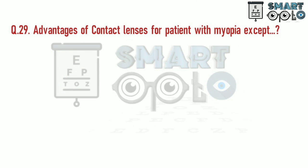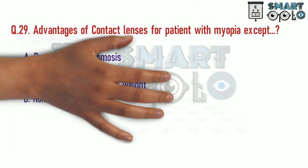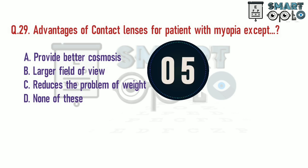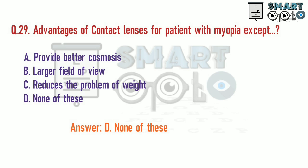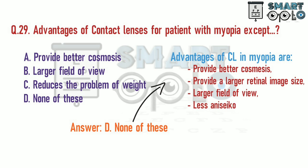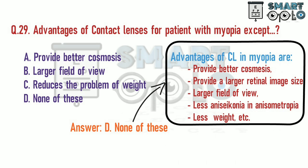Q29. Advantages of contact lenses for patients with myopia, except: A. Provides better cosmesis. B. Larger field of view. C. Reduces the problem of weight of spectacle lenses. D. None of these. Advantages of contact lenses in myopia include better cosmesis, larger retinal image size, large field of view, less anisoconia in anisometropia, and less weight compared to spectacle lenses.